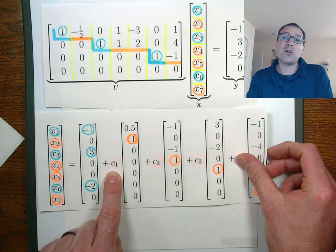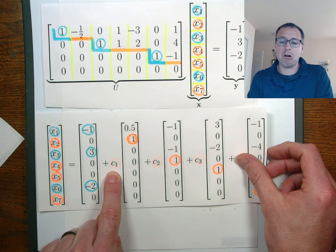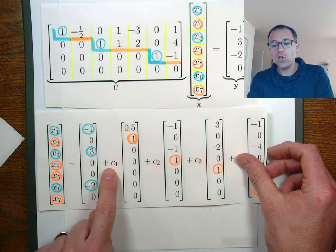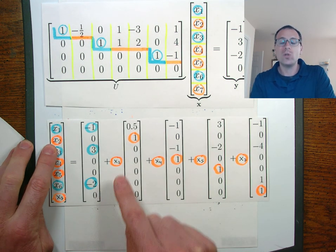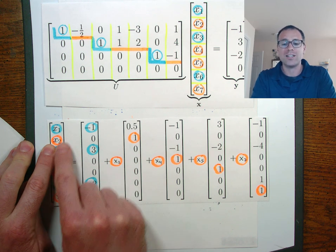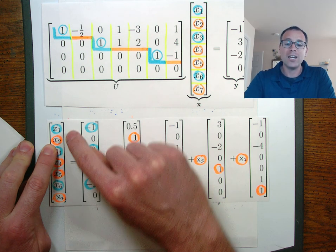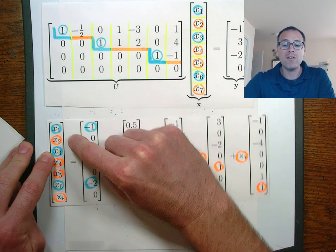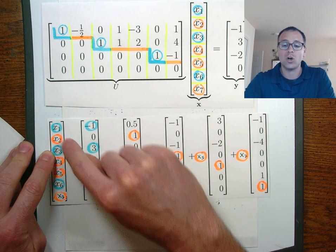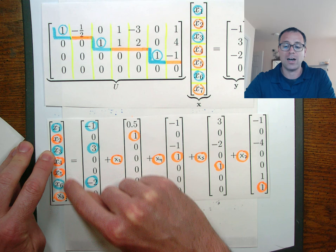This is where yours truly gets a little bit cranky - you kids get off my yard with those c1s, c2s, and c3s. Why not, if we're going to use those variables as free variables, just replace them with x2? Don't introduce new notation, just use the same notation that's hidden inside the vector. Here we see the pivot variables are x1, x3, and x6. The free variables, the ones we're free to choose, are x2, x4, x5, and x7.